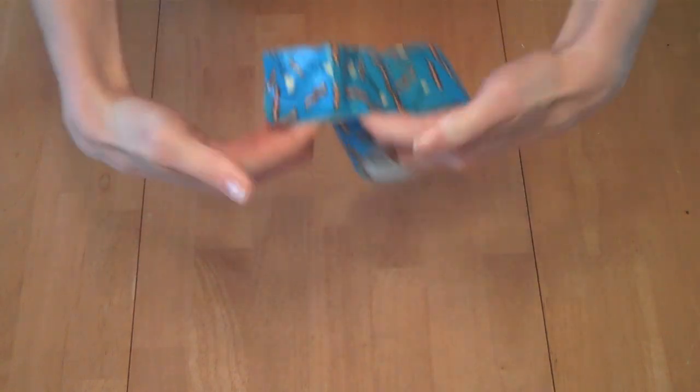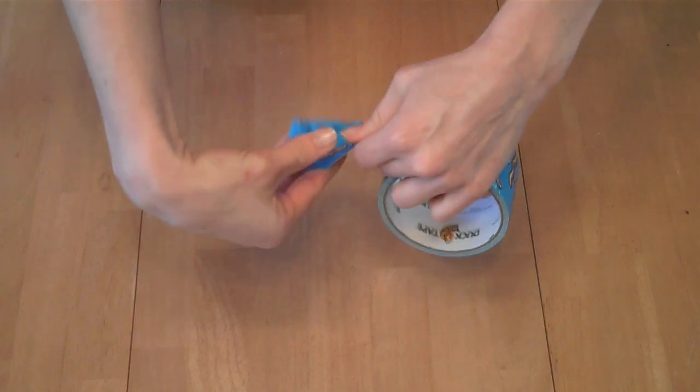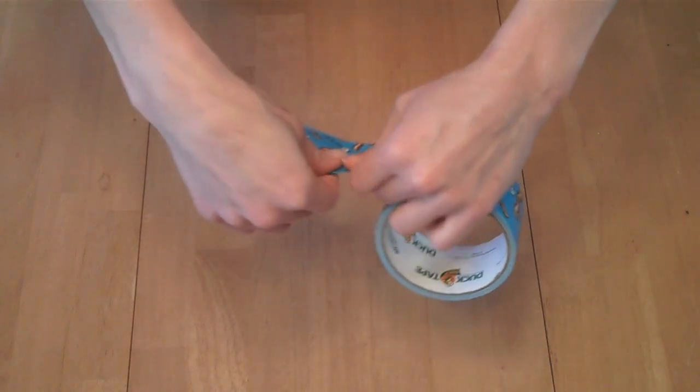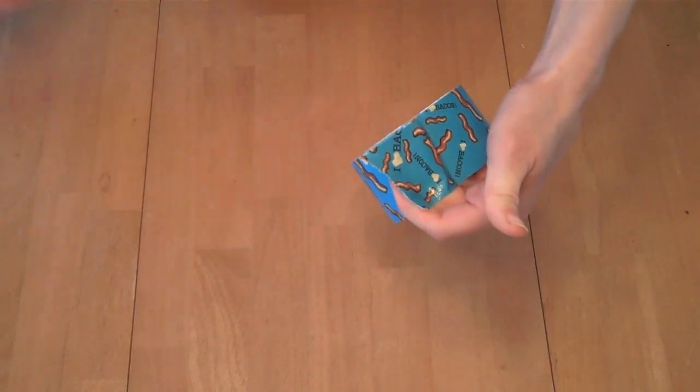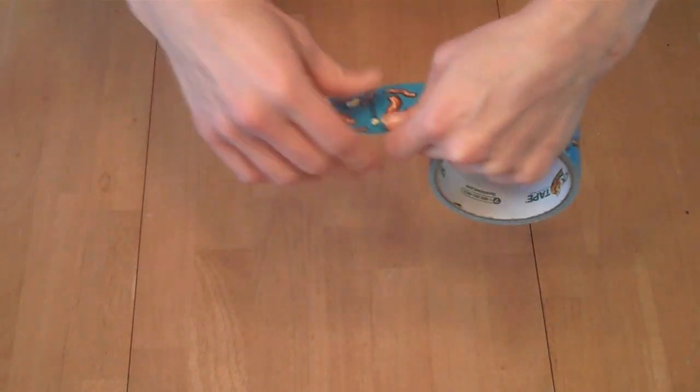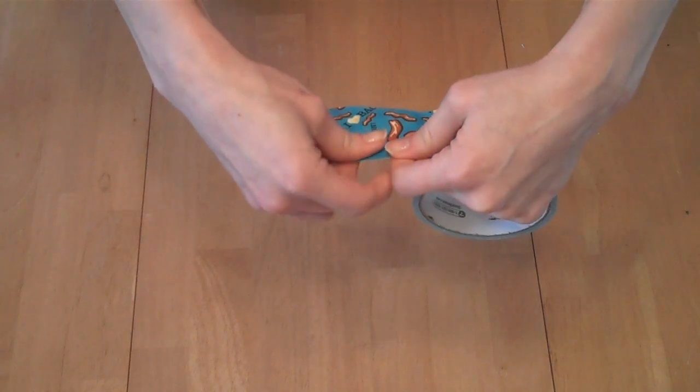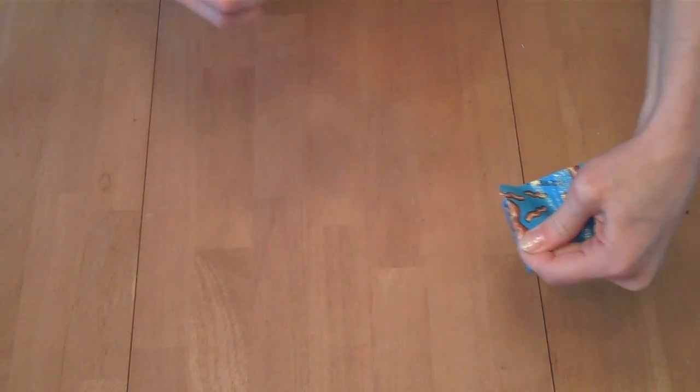Or if you're pulling out this way instead of forward and back, it might not tear as easily either. So just make sure you get your fingers on both sides of the tape and then just tear.